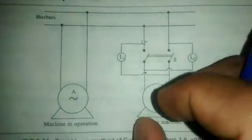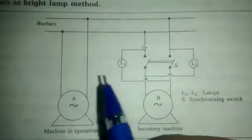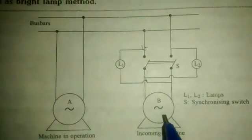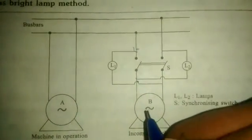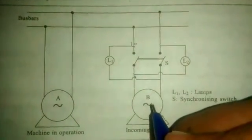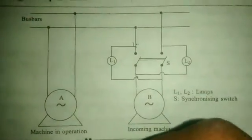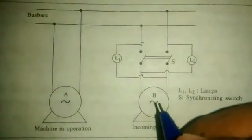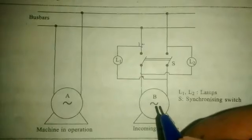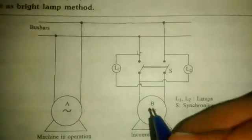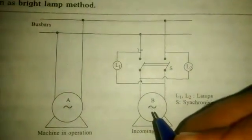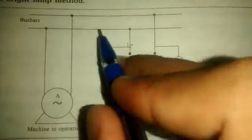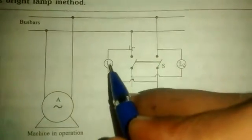So this is how we decide. The operating machine is running, and the incoming machine is also running. In the first case, the incoming machine is faster — it is a speeder. The operating machine is slower at 1800 rpm. This is the voltage here, through this lamp.